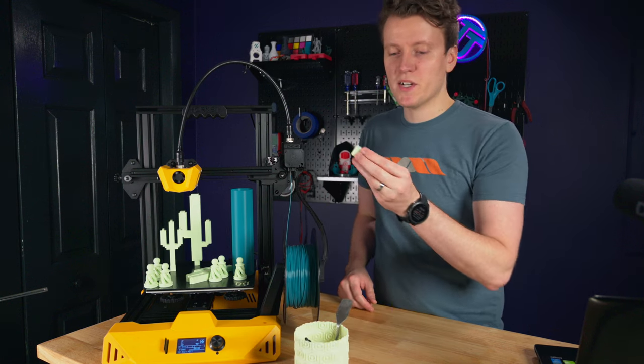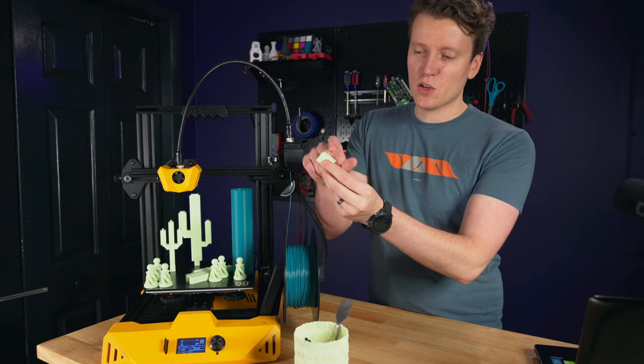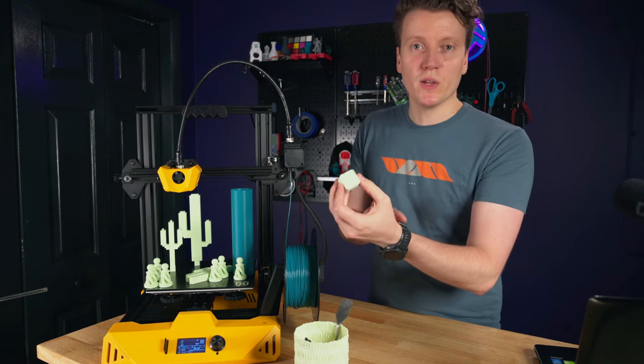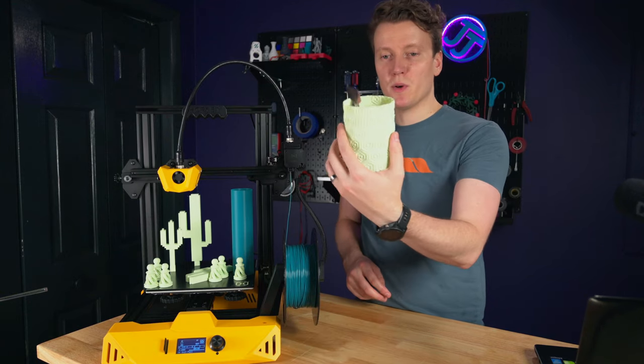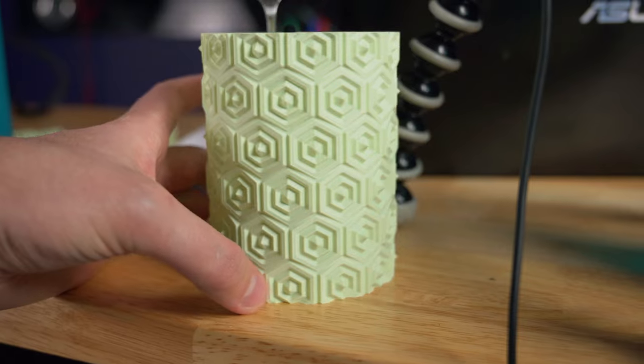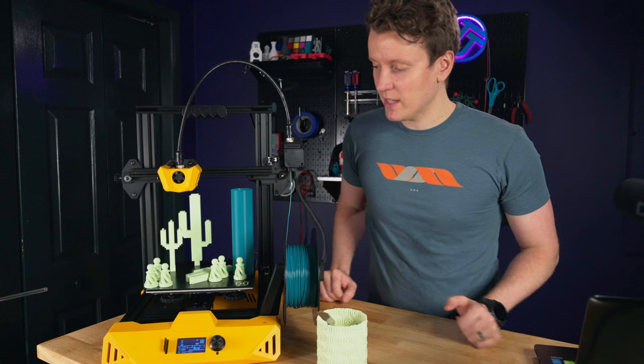So when it came to testing, first I printed out their test print. It's a little rounded edge cube with the Artillery logo on top. Printed really well. Then I printed some vase mode prints. First I did this one, a little pencil and tool holder. Always nice to have that nearby a printer, just keeping my tools in one place.